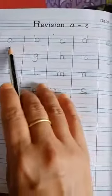Come to the next page. This is also the revision of A to S. You have to write like this, total from A to S in phonic. Complete this page.